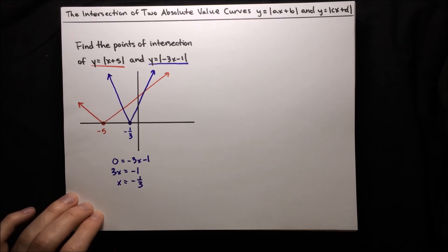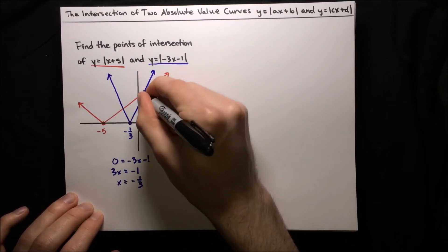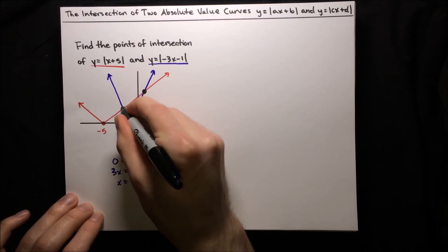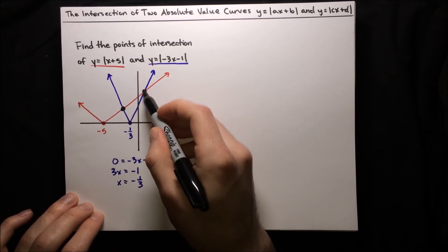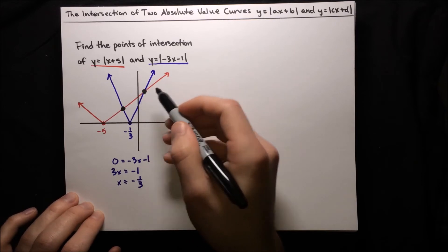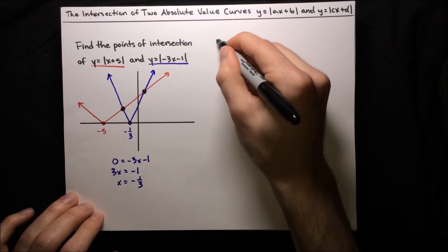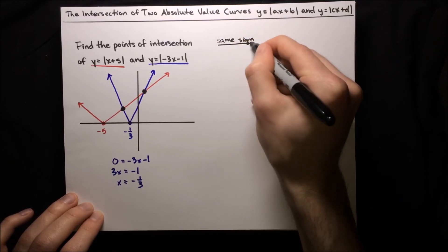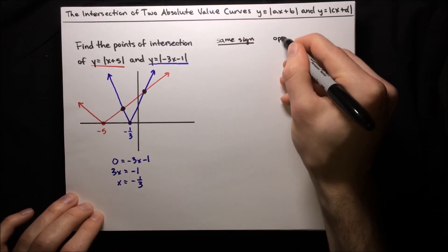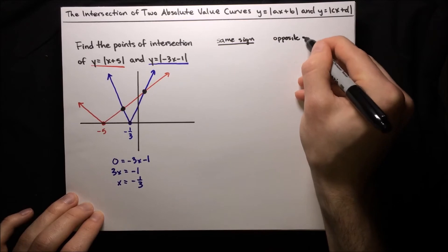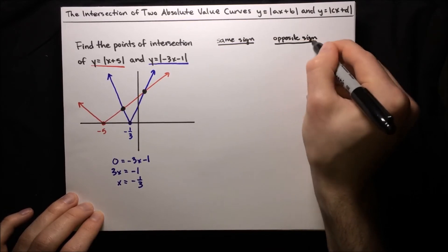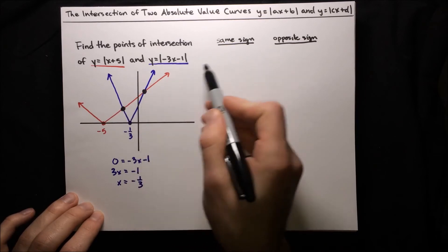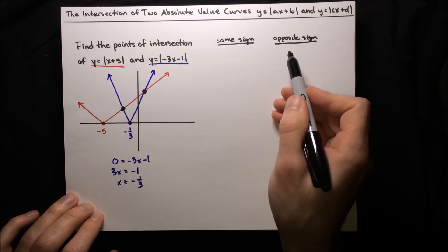We can see pretty clearly there are two points of intersection — one right here and one right here. Because there are two points of intersection, that tells us that both of our algebraic equations — the one with the same sign and the one with the opposite sign — will each give us a solution, since each equation needs to account for one intersection point.